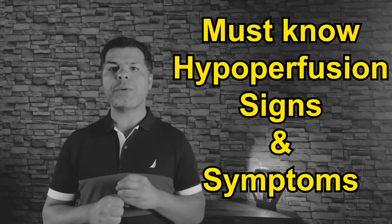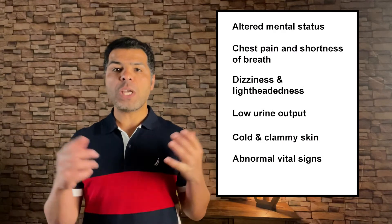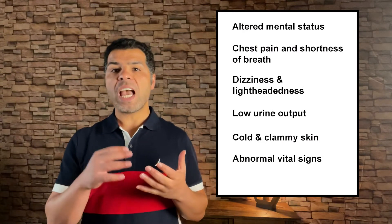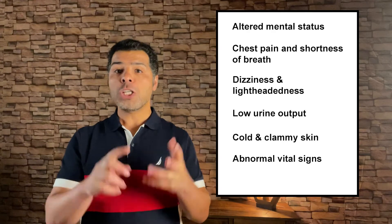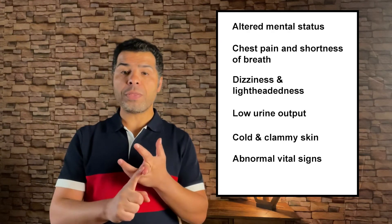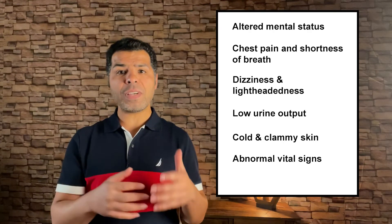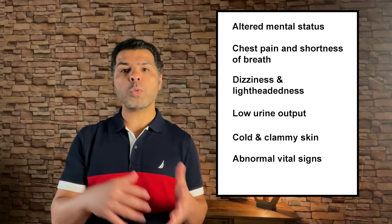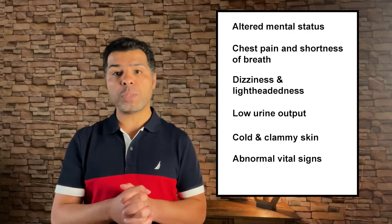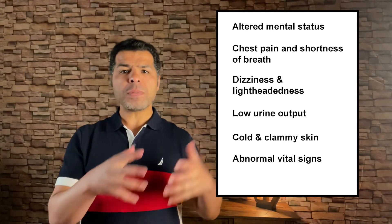So what are the signs and symptoms of hypoperfusion? All of the following can be considered a sign or symptom. The most important one is a change in mental status — the patient may develop confusion, agitation, lethargy, or obtundation. Other signs include chest pain, shortness of breath, dizziness or lightheadedness, and oliguria or low urine output — which is difficult to assess if urine output was not already being monitored during this patient's admission. Also: cold, clammy, and mottled skin — a very important sign.